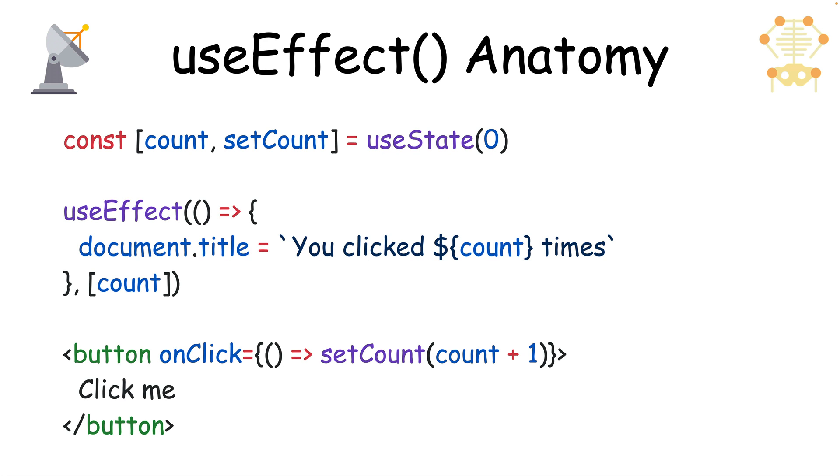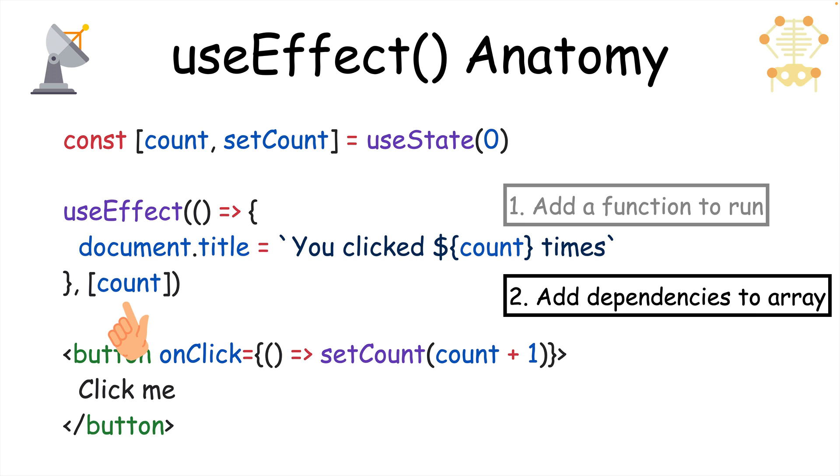A good basic example of performing a side effect is to set the title using the document API. To do that, you first give useEffect a function to run, and by default, it'll run after each render. To change that behavior, you can give it a dependencies array. When any value in this array changes, the effect function will run.